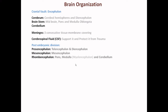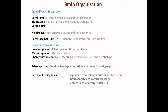Considering the post-embryonic division, the brain can be divided into three sections: prosencephalon, which includes telencephalon and diencephalon; mesencephalon; and rhombencephalon, which includes pons, medulla (also called myelencephalon), and the cerebellum. The telencephalon contains the cerebral hemispheres, white matter, and basal ganglia. The cerebral hemispheres are separated by fissures and interconnected by the fiber corpus callosum.